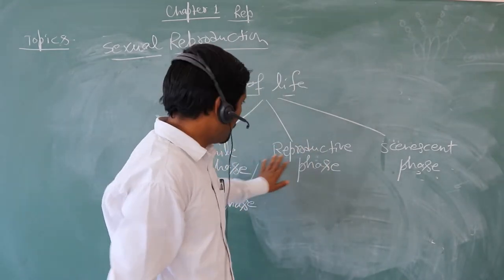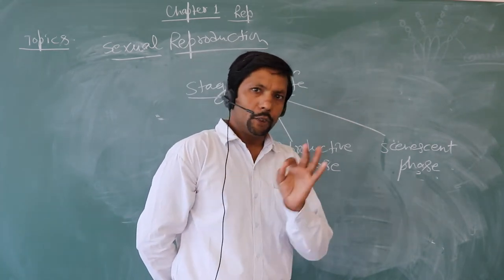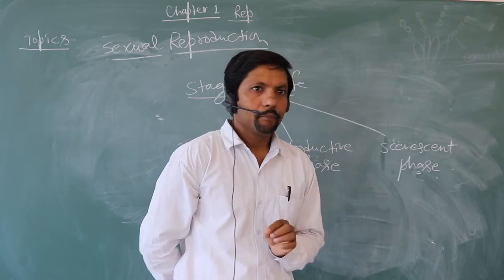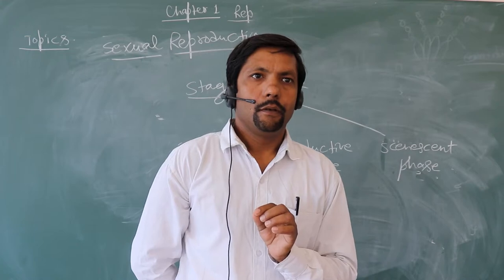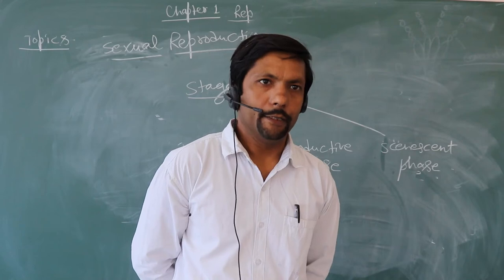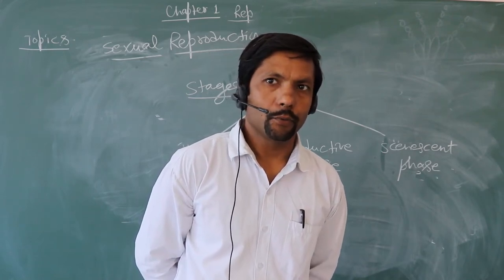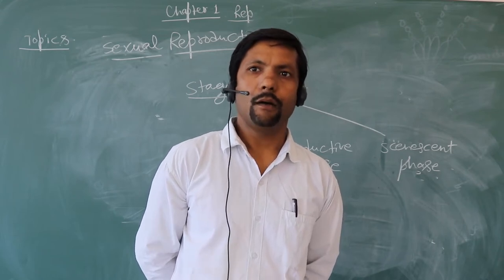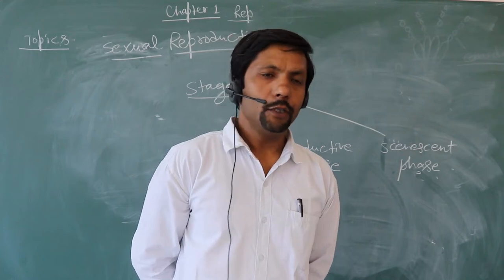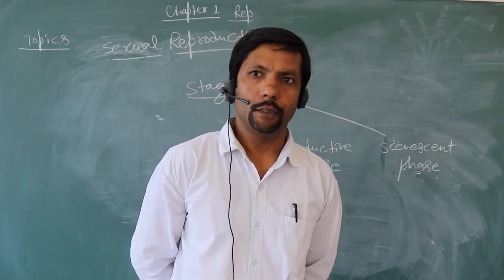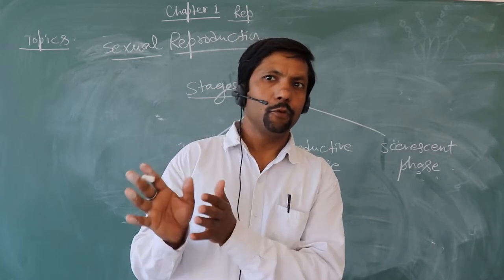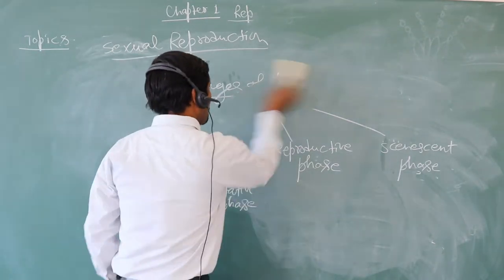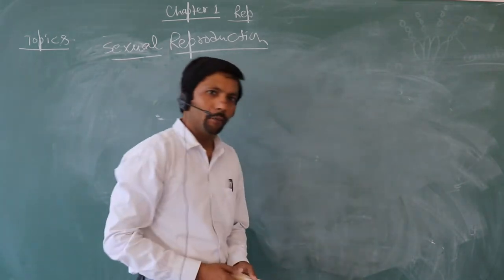In sexual reproduction, the sex organs produce the gametes. Since it is biparental, the male part is present in the male body and the female part in the female body. Different methods are applied by different organisms. The different events which take place before fertilization are called pre-fertilization events, and all events which take place after fertilization are called post-fertilization events. Pre-fertilization events include gamete formation and transfer of gamete.